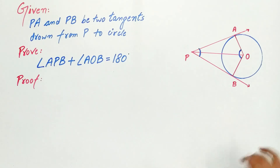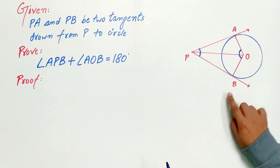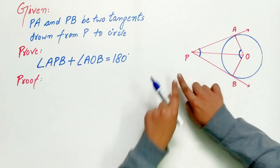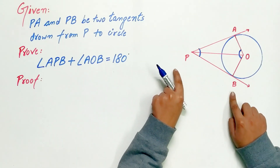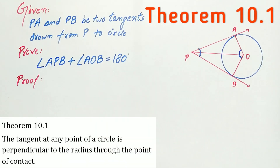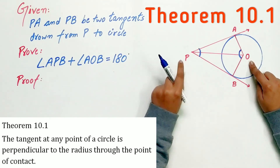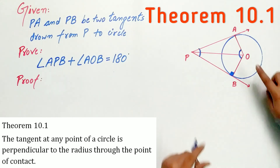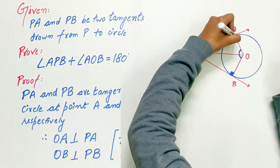OA and OB are the radii of the circle; PA and PB are tangents to the circle. So via Theorem 10.1, OB is perpendicular to PB and similarly OA is perpendicular to PA.